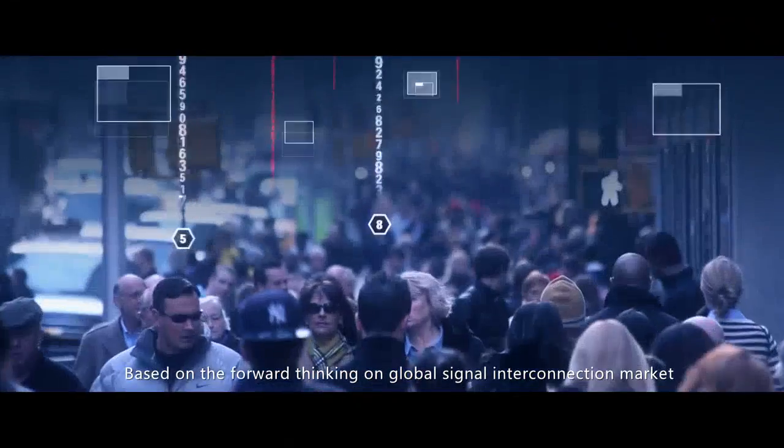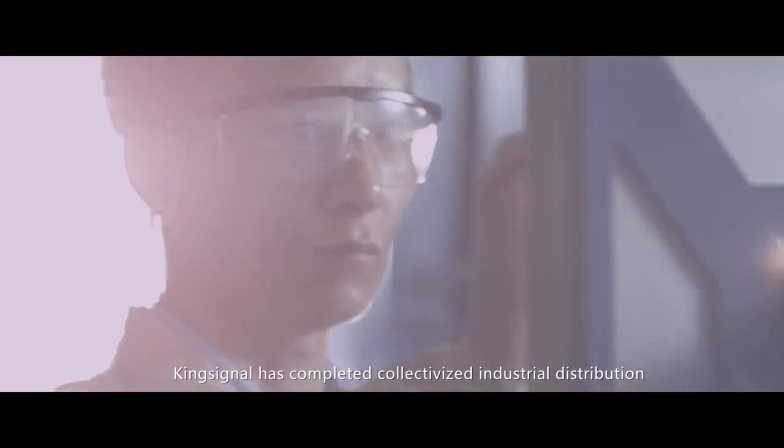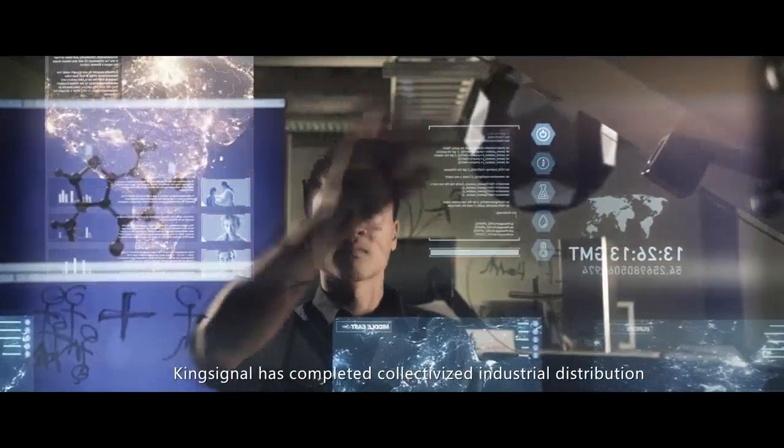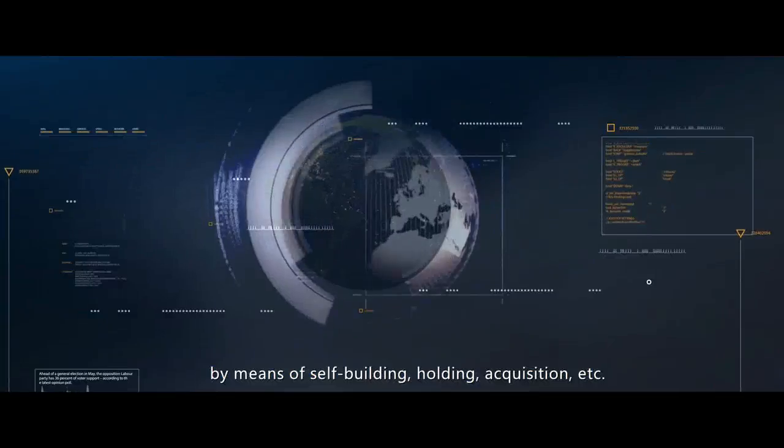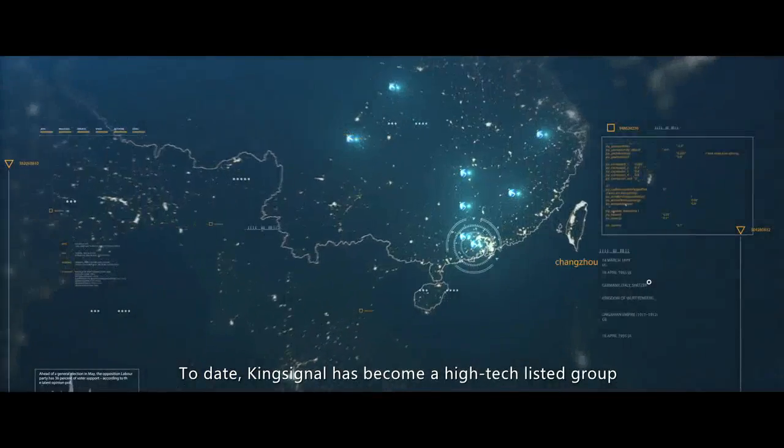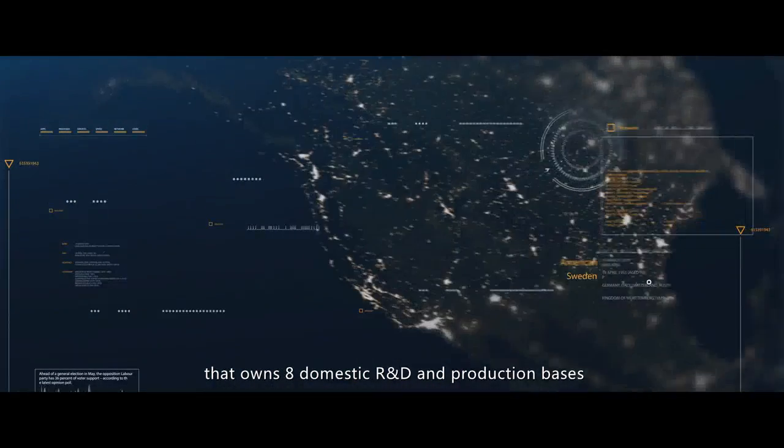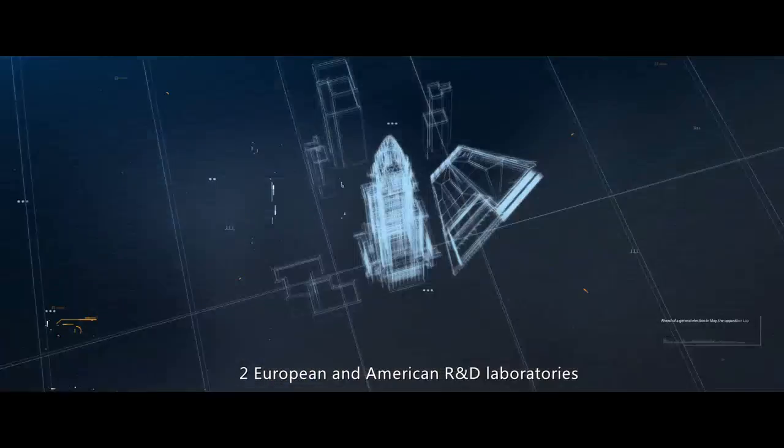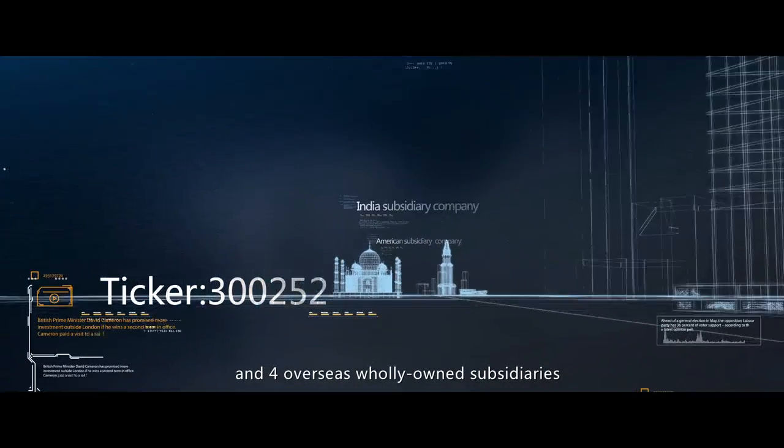Based on forward thinking on the global signal interconnection market, King Signal has completed collectivized industrial distribution by means of self-building, holding, and acquisition. To date, King Signal has become a high-tech listed group that owns eight domestic R&D and production bases, two European and American R&D laboratories, and four overseas wholly-owned subsidiaries.